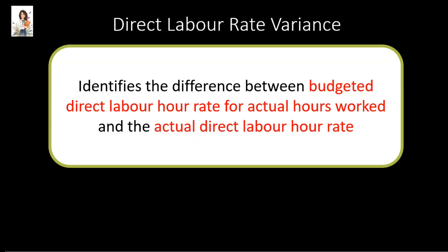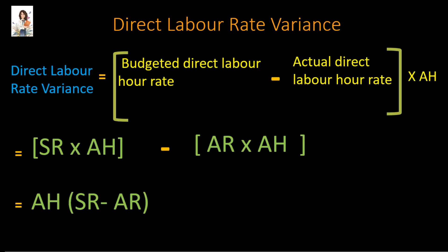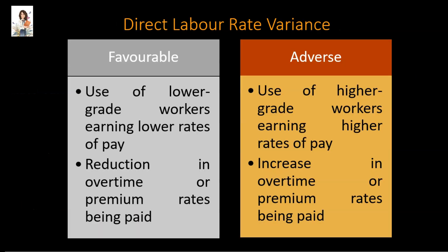Moving on to direct labor rate variance, this variance identifies the difference between the budgeted direct labor hour rate for actual hours worked and the actual direct labor hour rate. The formula is: standard wage rate minus actual wage rate, the whole thing multiplied by actual labor hours. A favorable direct labor rate variance could arise due to use of lower grade workers than were originally budgeted for, or a reduction in overtime or premium rates compared to the budgeted rates. An adverse direct labor rate variance could be due to use of higher grade workers than were originally budgeted for, or an increase in overtime or premium rates compared to the budgeted rates.